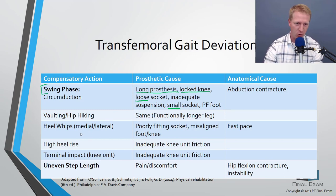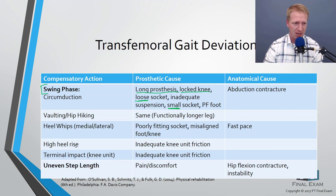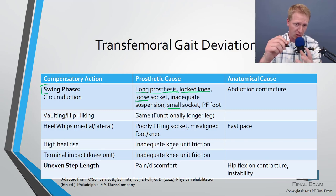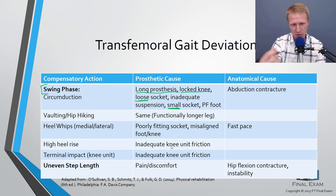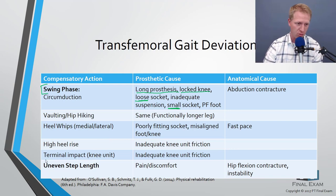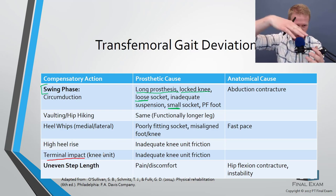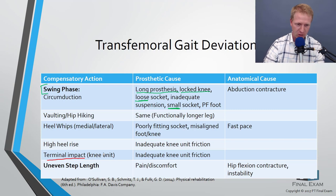Medial and lateral whips happen when the foot or knee is misaligned — the heel whips to one side as it comes off the ground. High heel rise occurs with inadequate knee friction, allowing the heel to jerk upward too quickly. Terminal impact is when the knee flips to full extension loudly during swing — also caused by inadequate knee friction.